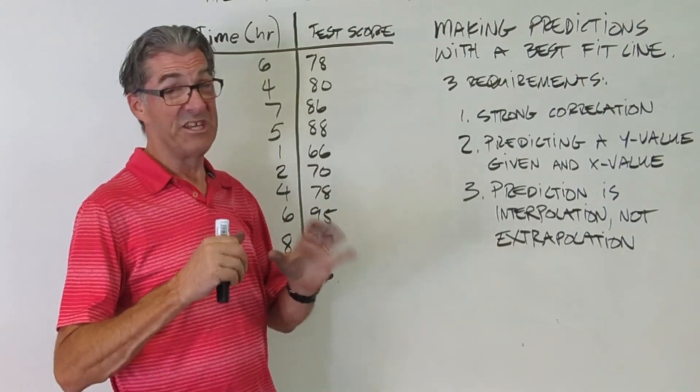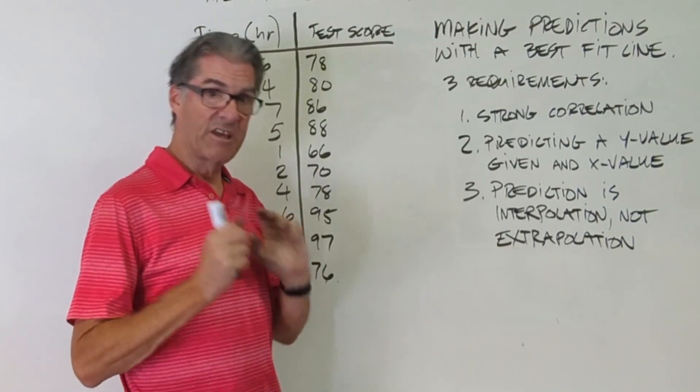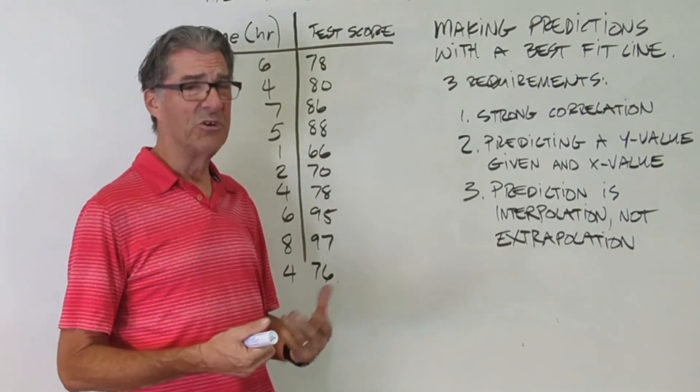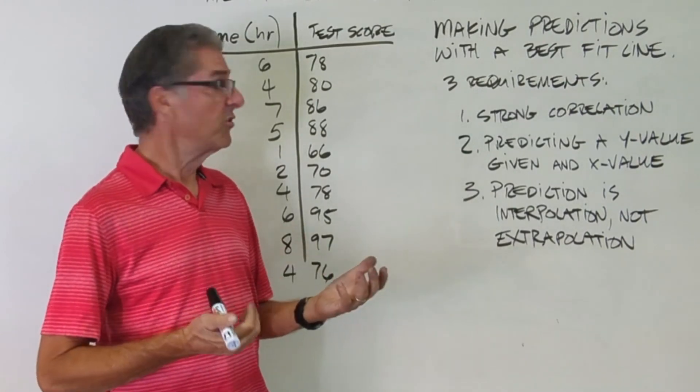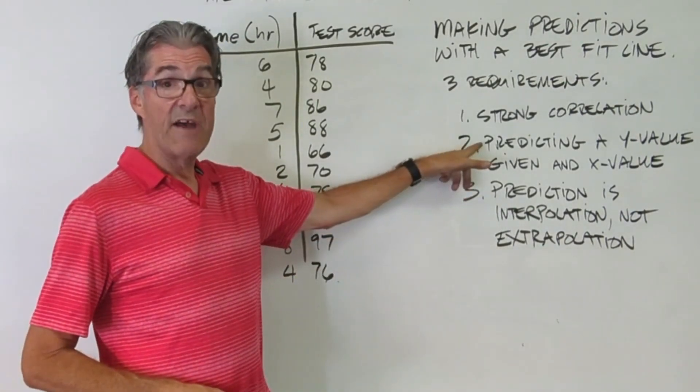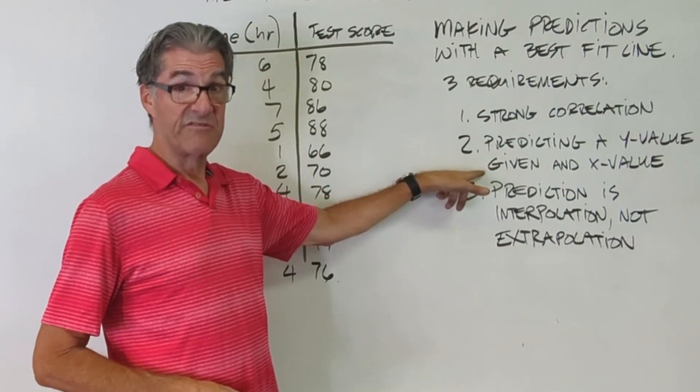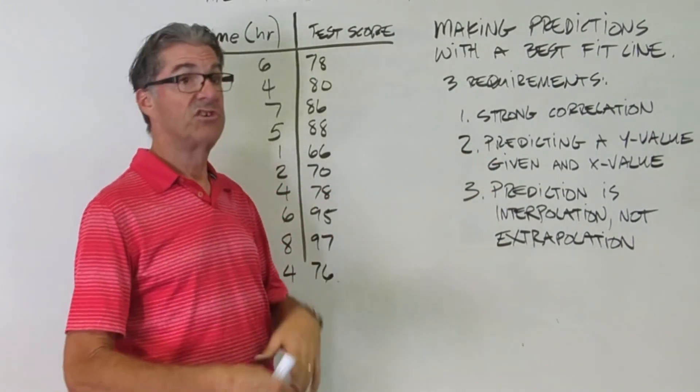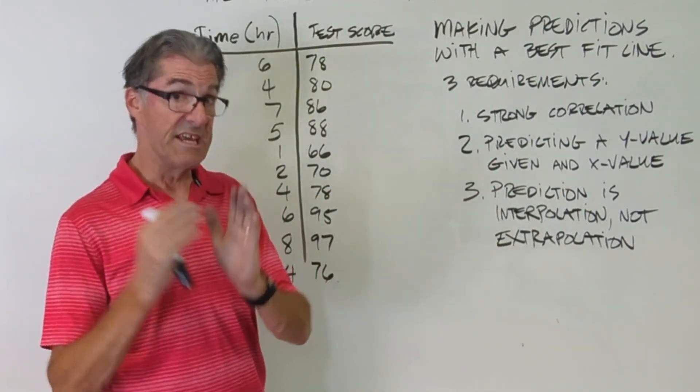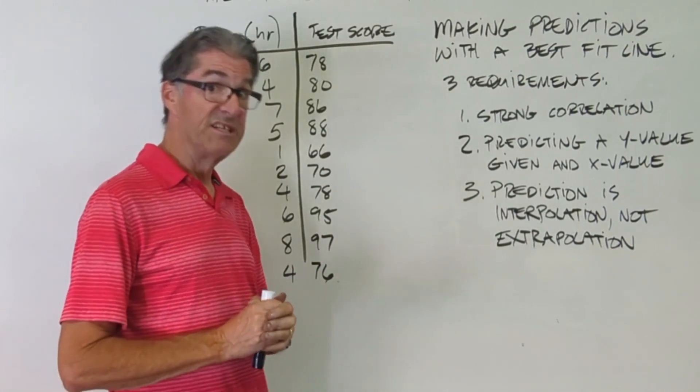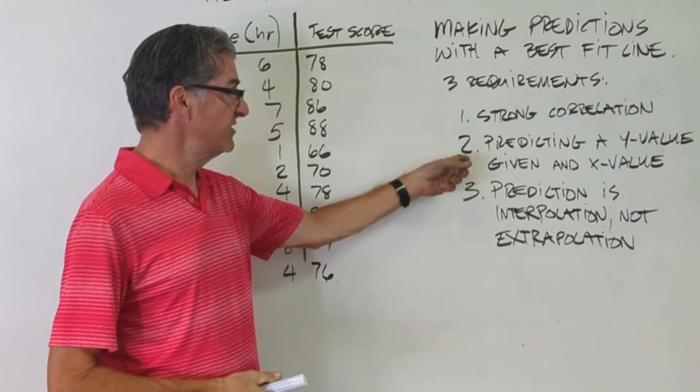So the first one, you've got to have a strong correlation. If your r value doesn't indicate a strong correlation, then you can't make predictions, or if you do, they're not going to be so good. Second thing, you're predicting a y value given an x value. So you use the x to predict the y, or you use the independent variable to predict the dependent variable. So that's the second condition.